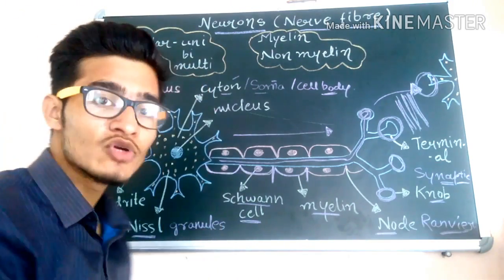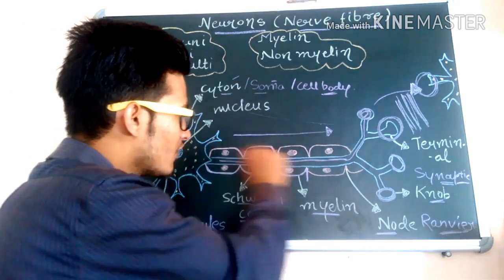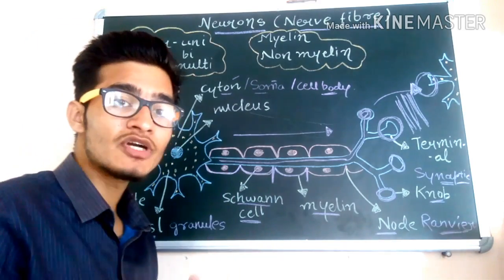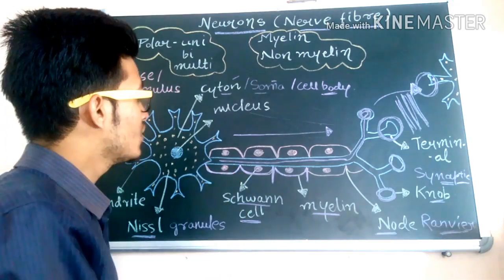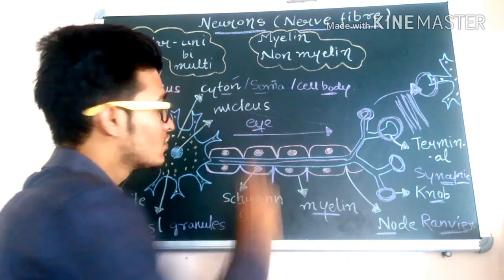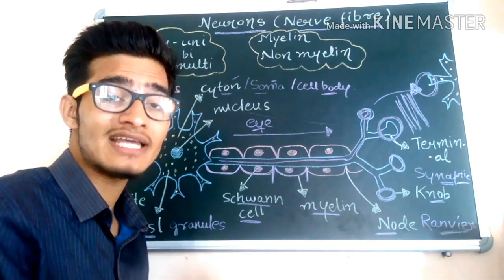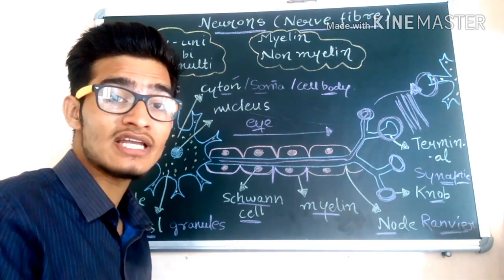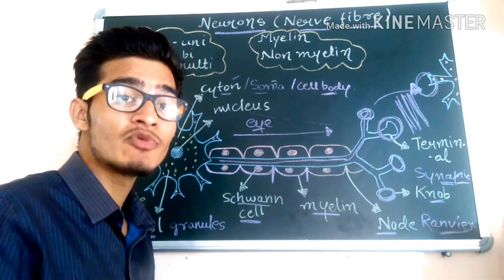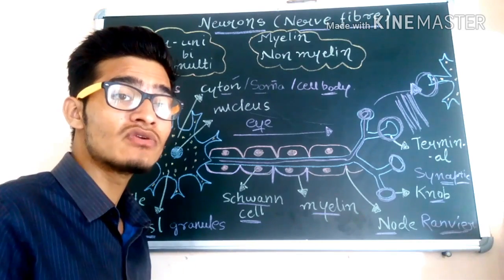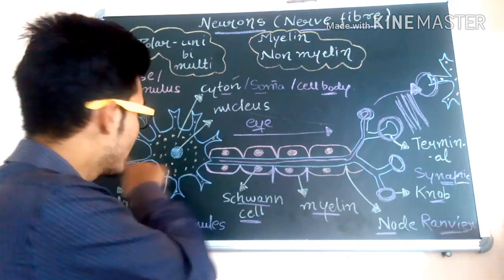The second type is the bipolar neuron, in which there is only one dendrite. Bi simply means two, so there will be one axon and one dendrite — that kind of neuron is known as a bipolar neuron and it can be located in the eye. You know very well about the retina where image is formed. The retina is formed of three layers: the sensory cell layer, the ganglionic cell layer, and the bipolar neurons layer, which consists of bipolar neurons containing only one axon and one dendrite.